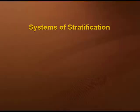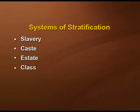Now let's talk about the systems of stratification in the world. There are four basic systems: slavery, caste, state, and class. Slavery is almost eradicated but still discussed because certain discriminations still exist. The state system refers to society divided on the basis of land owned by different groups of people.